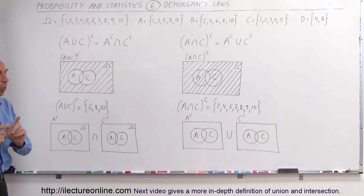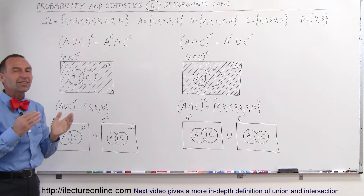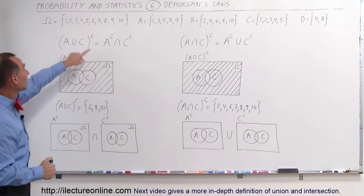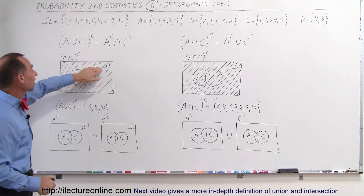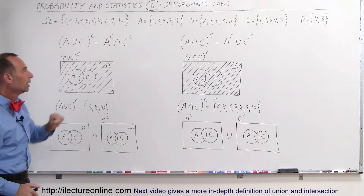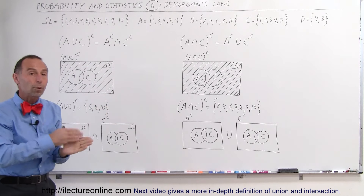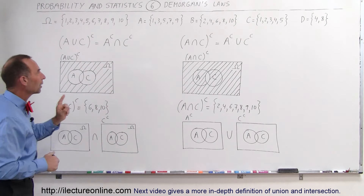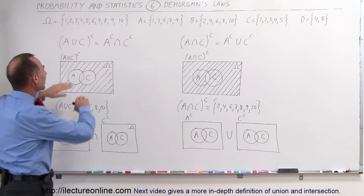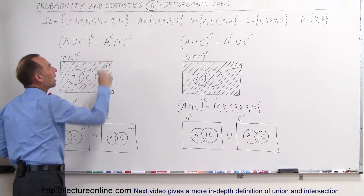Now we're going to talk about De Morgan's Laws. De Morgan said that if you do the union of A and C — meaning all the elements that belong to A, all the elements that belong to C, and the elements that belong to both A and C, everything combined — and then take the complement of that, that means everything outside A and C. This symbol means union, that means together. This symbol means intersect, meaning only those elements that belong to both A and C. De Morgan said that the complement of A union C, so everything outside of A and C, is equal to the complement of A intersected with the complement of C.